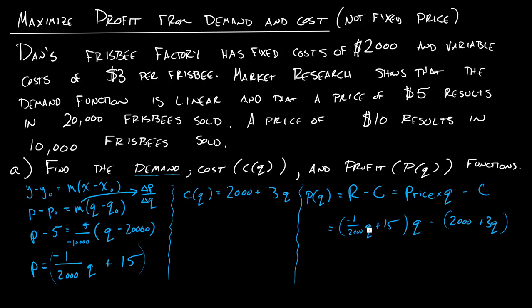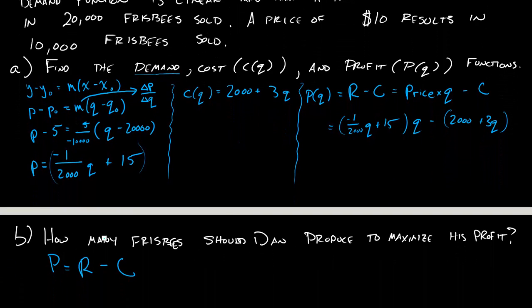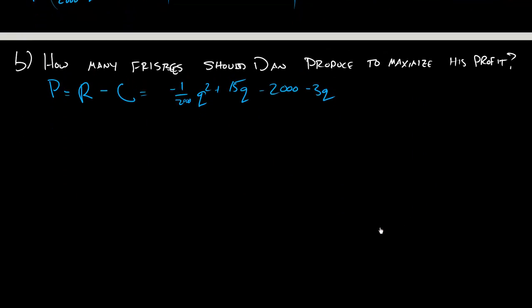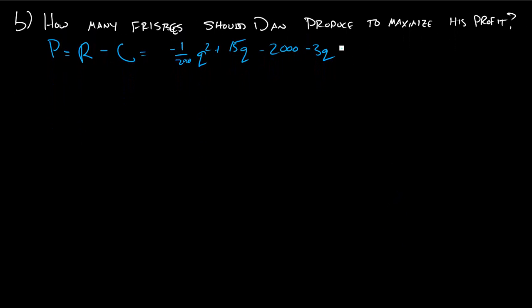So what I have here is a function where I can tell it how many Frisbees I produce and it'll tell me what my profit is for producing that many Frisbees. Now back to part B, what I really care about, how many Frisbees should I produce to maximize my profit? Well, up here I've kind of figured out my equation. I've figured out the negative 1 over 2,000 Q squared plus 15 Q minus 2,000 minus 3Q. I'm just being careful with all my negatives and parentheses there. And this will simplify a little bit more to negative 1 over 2,000 Q squared plus 12Q minus 2,000. Great.